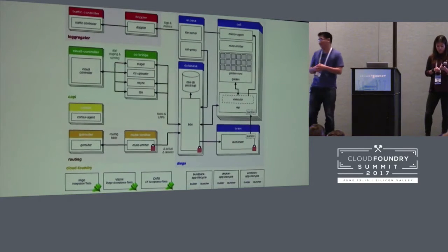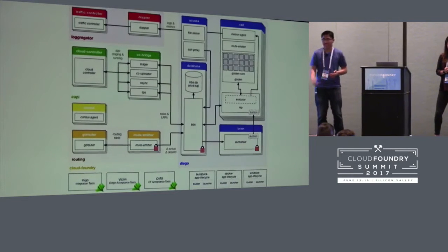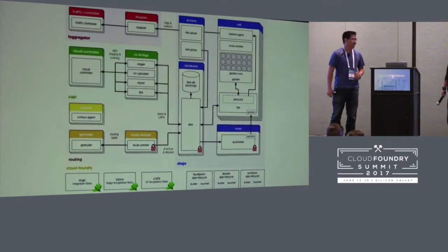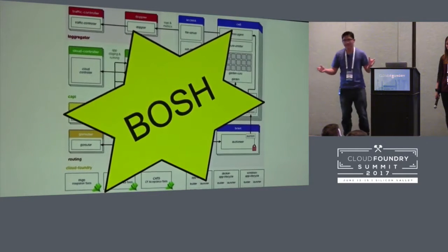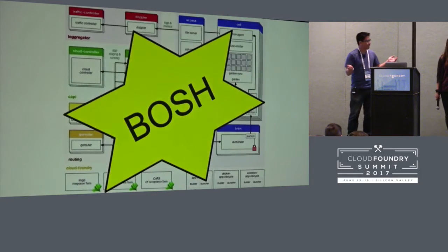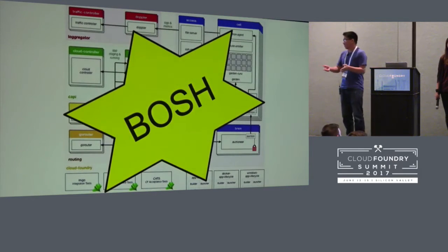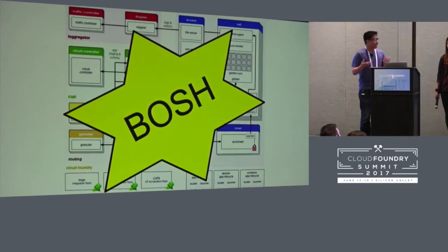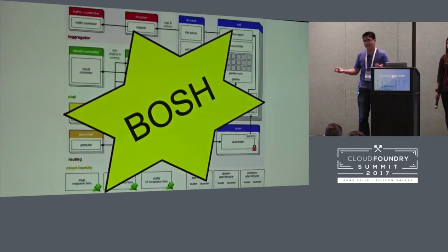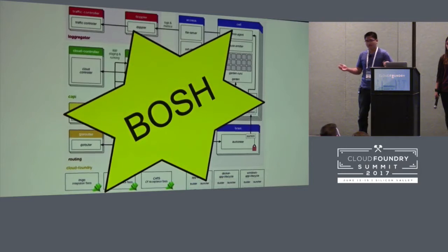So just to start, what does it mean to deploy Cloud Foundry? It essentially means deploying whatever's in this diagram, which you don't care about because you have Bosch. Bosch handles all this for you. You give it a deployment manifest which details all the VMs, the software, all the configuration, and then out comes the Cloud Foundry. But usually there's a couple hiccups that people encounter to even get to this point. The first is you have to put all this infrastructure or VMs somewhere, so you need some underlying infrastructure.